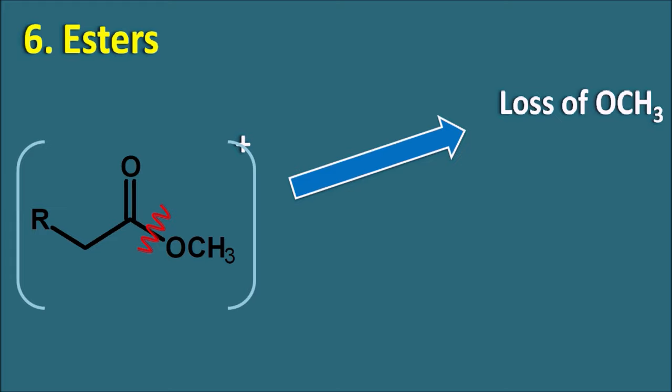Cycloalkenes: taking cyclohexene as a simple example, cycloalkenes can undergo fragmentation via a retro Diels-Alder reaction. The Diels-Alder reaction is a reaction between a diene and a dienophile forming two sigma bonds to give a cycloalkene. Cycloalkenes undergo the reverse process — fragmentation reverse to the Diels-Alder reaction — forming a diene with positive charge and a neutral alkene fragment. This fragment ion is observed at m/z 54.